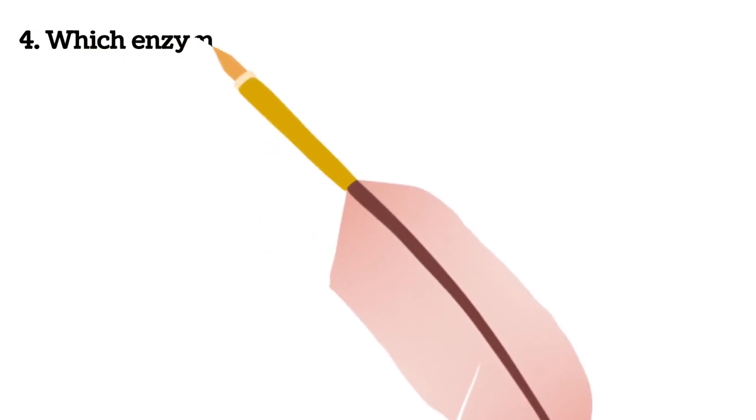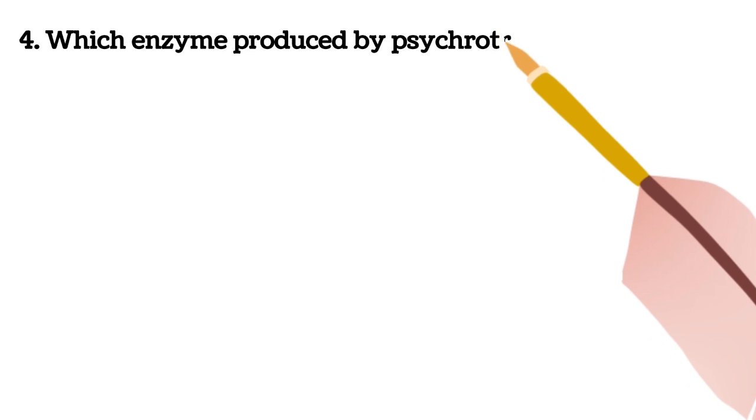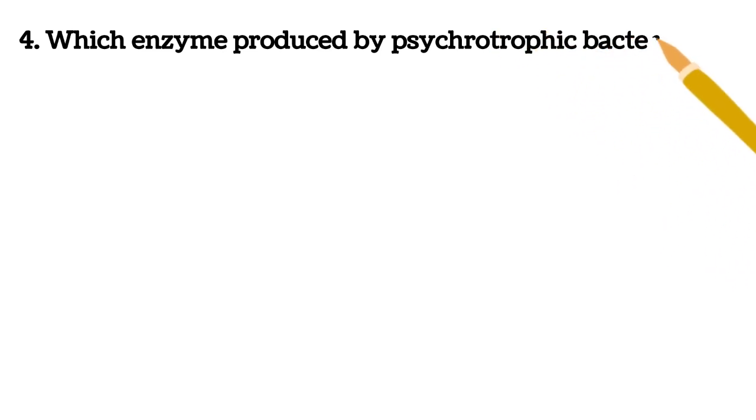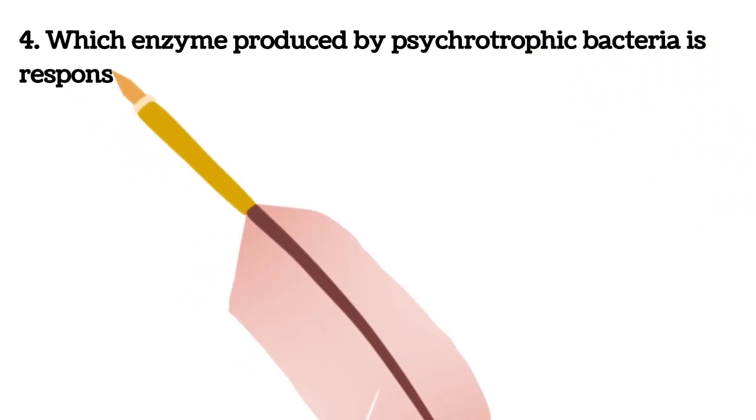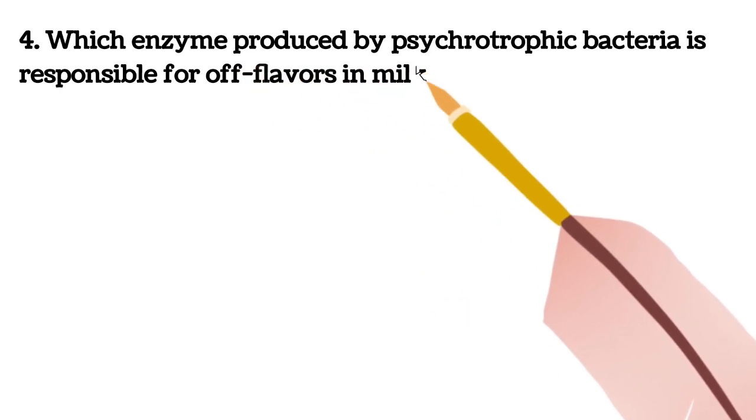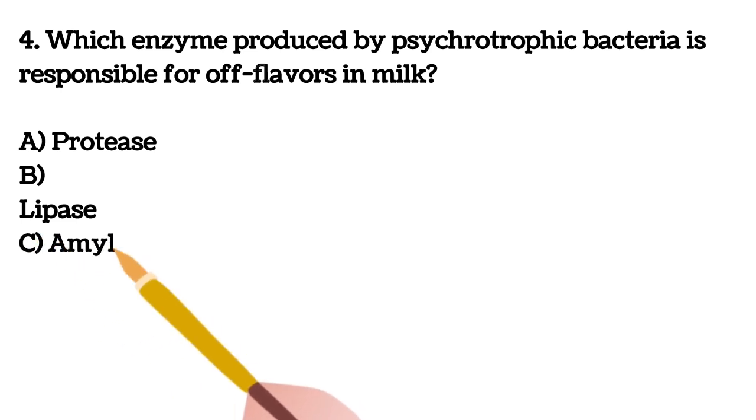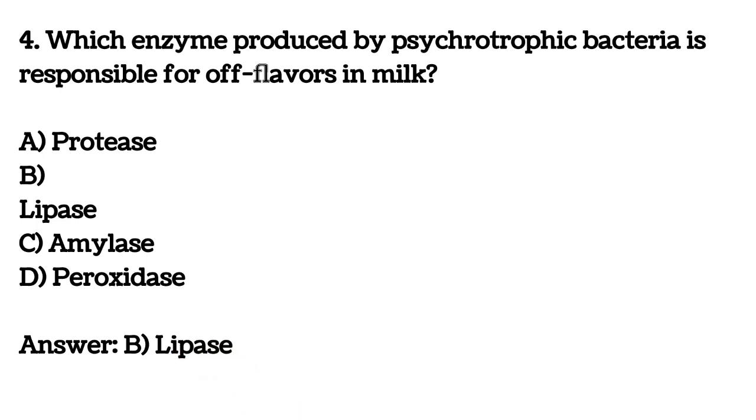Fourth question. Which enzyme produced by psychotropic bacteria is responsible for off flavors in milk? A. Protease B. Lipase C. Amylase D. Peroxidase. Your answer is B, Lipase.